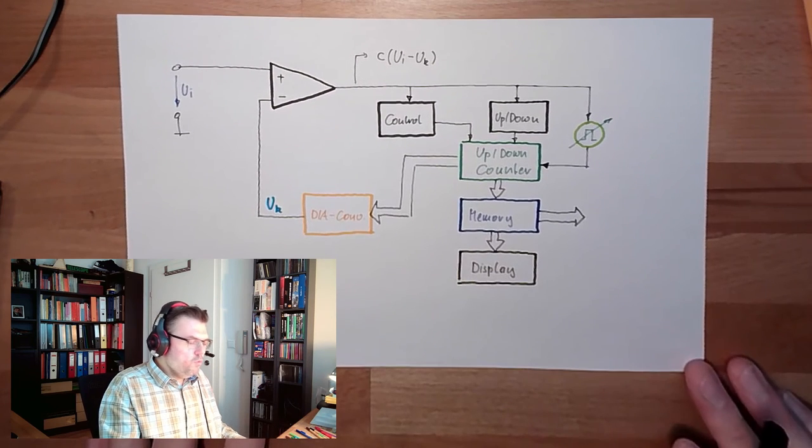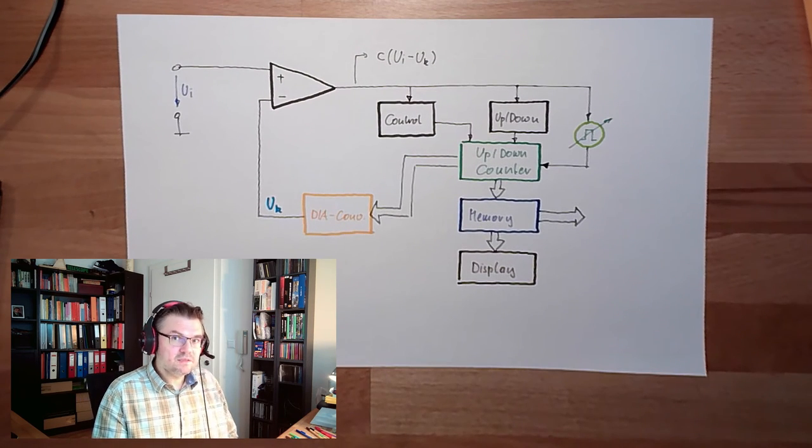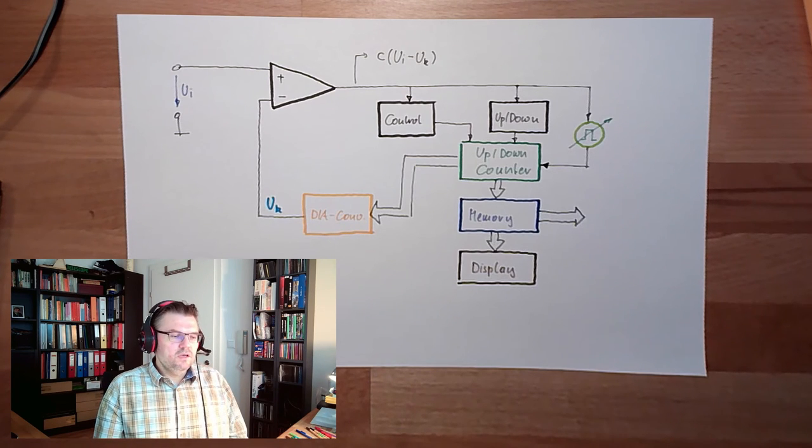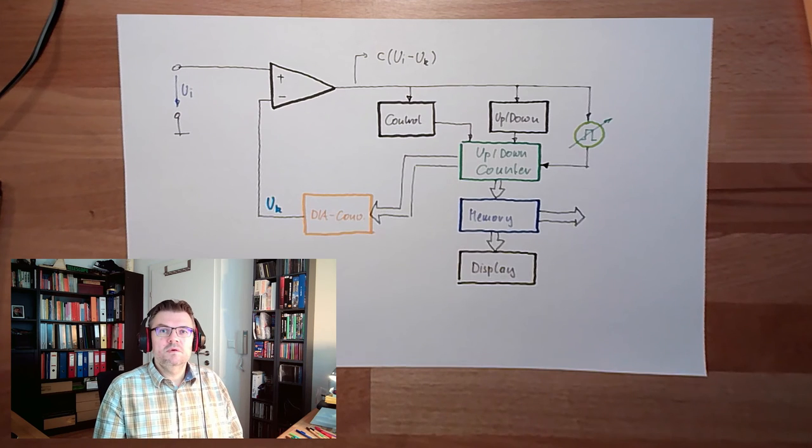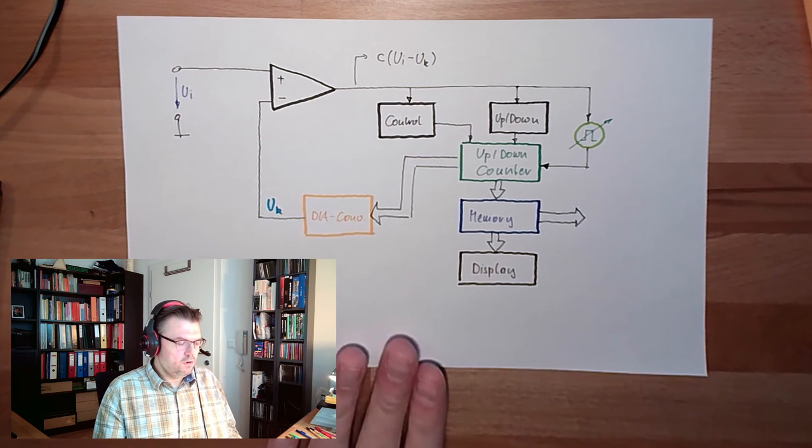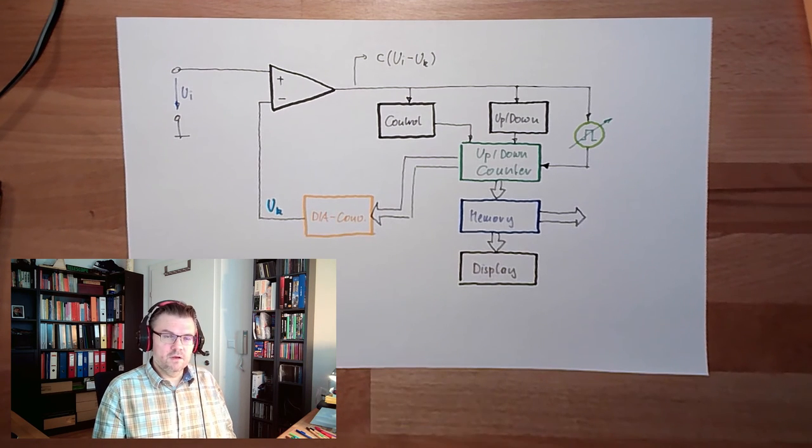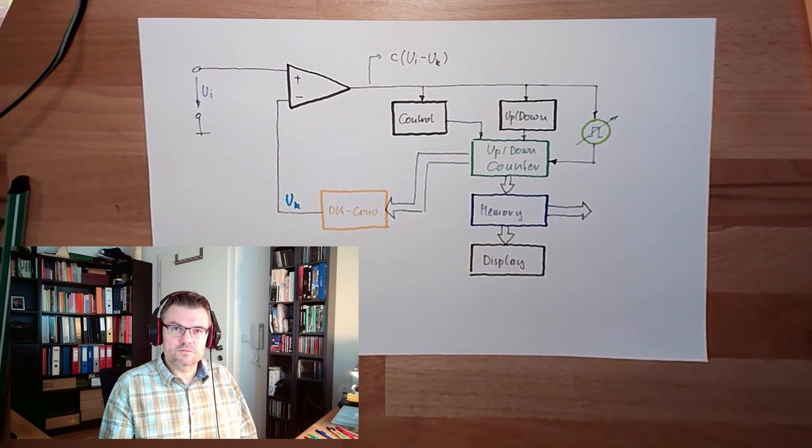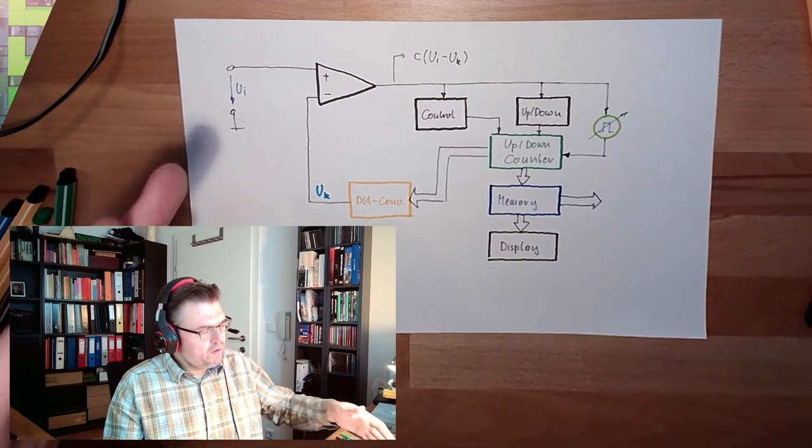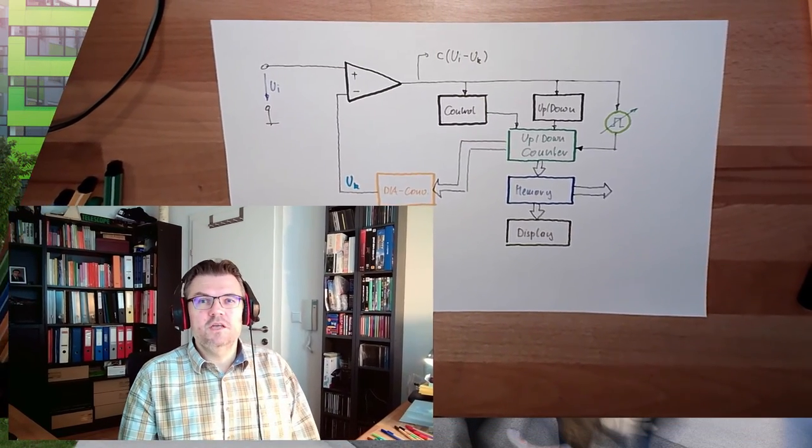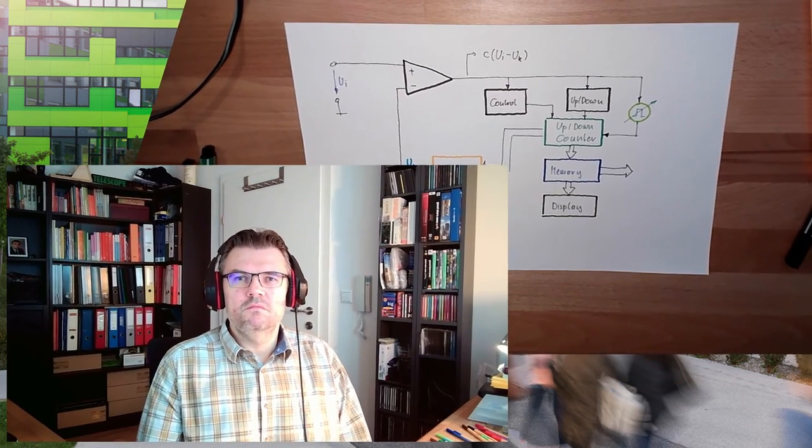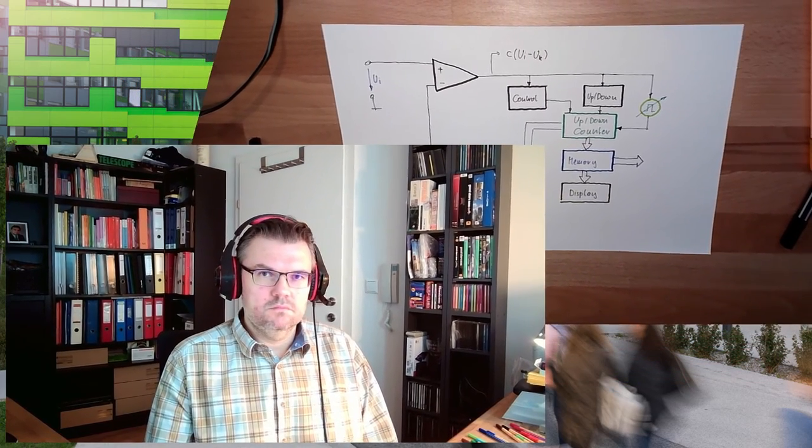So we're continuously starting from the last known value. This means that the time used for converting is not that high as with other methods. However, if you have a voltage which is changing rapidly, then this benefit is gone.